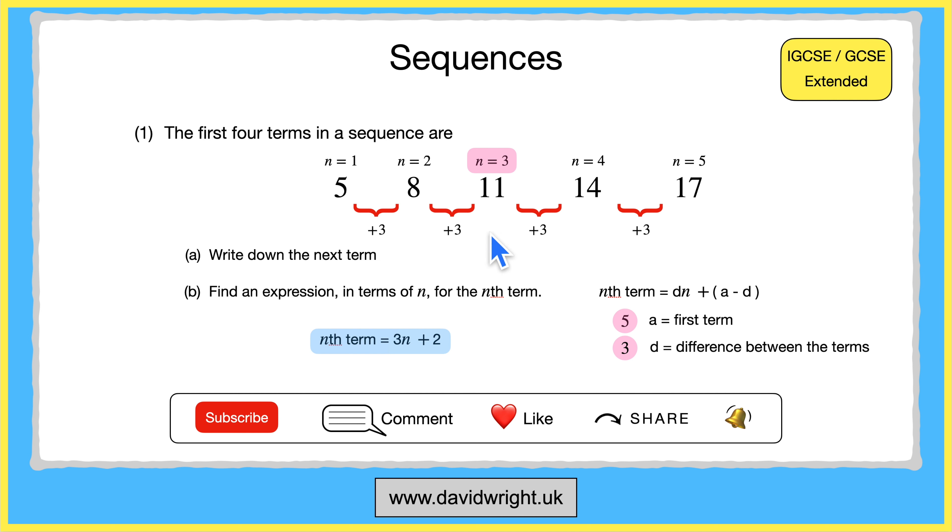If we check for n equals 5 we get 3 times 5 which is 15 plus 2 which is 17. So again our algebraic expression is correct.